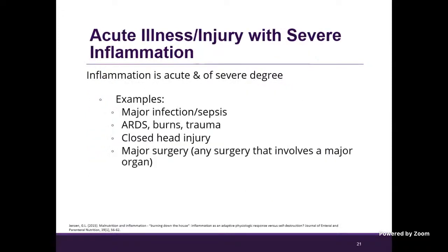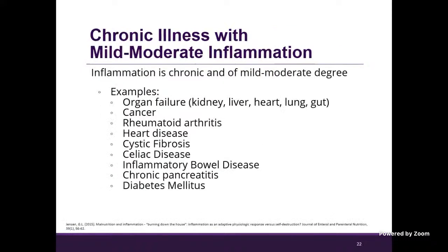Here are some examples. For acute illness and injury: major infection or sepsis, cardiac shock, septic shock, respiratory distress syndrome, burns, trauma, closed head injury, any major surgery especially involving a major organ — there's going to be inflammation that's acute and of severe degree in those cases. For chronic illness with mild to moderate inflammation — where it's always present but not that marked response — examples include organ failure (dialysis patients would be included here), cancer, heart disease, and cystic fibrosis. The list can go on with inflammation associated with various disease states.